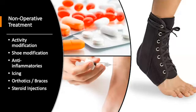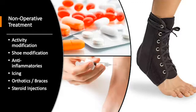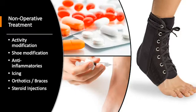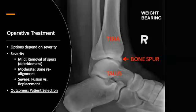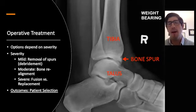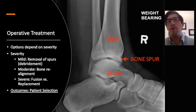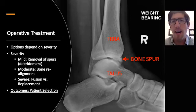We've gone over non-operative intervention quite a bit. For me, it's activity modification, shoe wear modification, anti-inflammatories, icing, steroid injection, and braces. Bracing plays a huge role in non-operative foot and ankle surgery and in ankle arthritis. I have many patients who are too sick to undergo surgery, and these modalities can really help them improve their quality of life and function. However, when these interventions fail, we do have very good operative interventions for end-stage ankle arthritis.